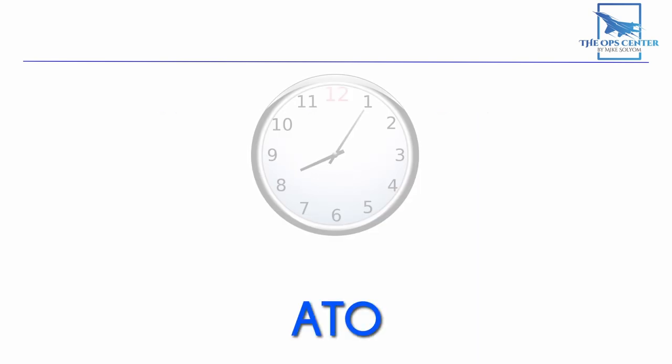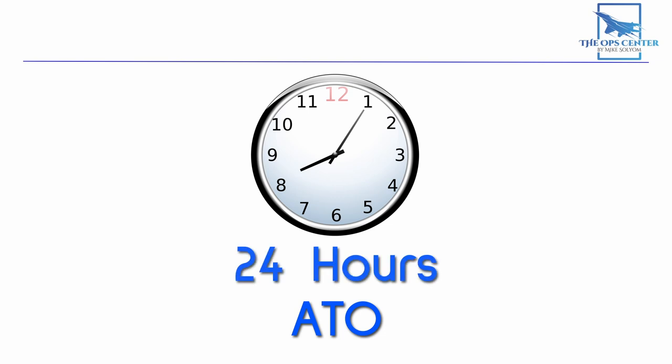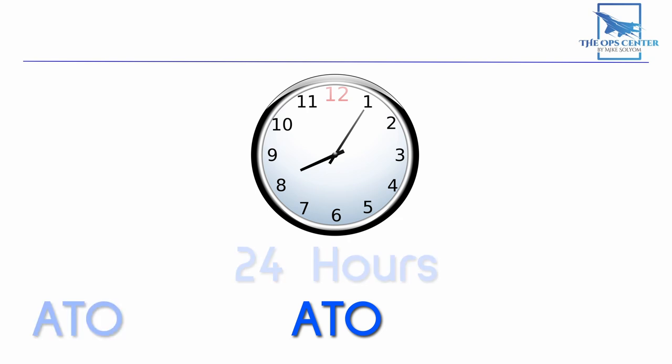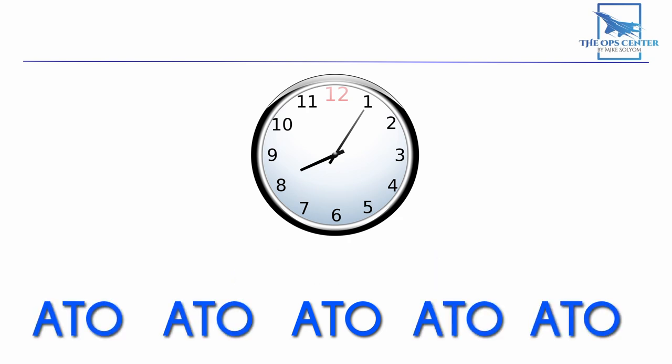ATOs are made to cover a 24-hour period. So if a JFAC has enough air assets to take one 20% chunk of the target list in a day, then you could reasonably expect there to be 5 ATOs for 5 days of fighting.